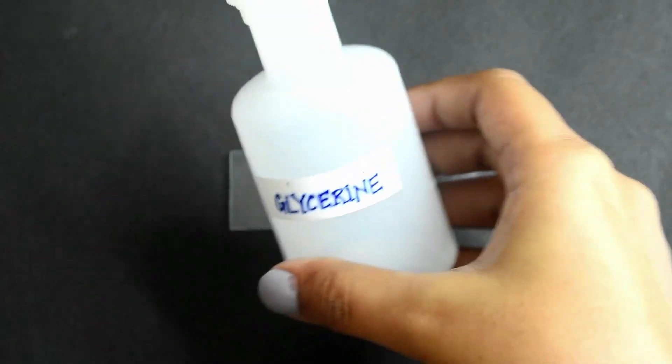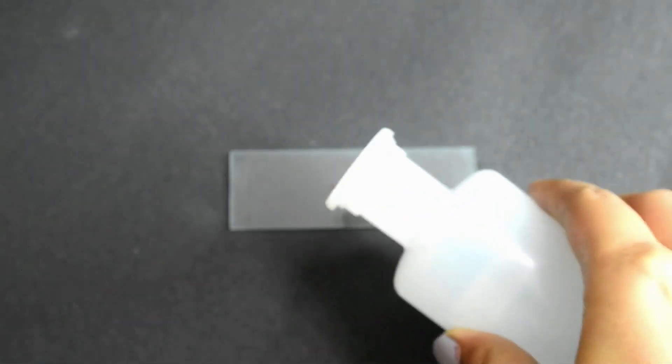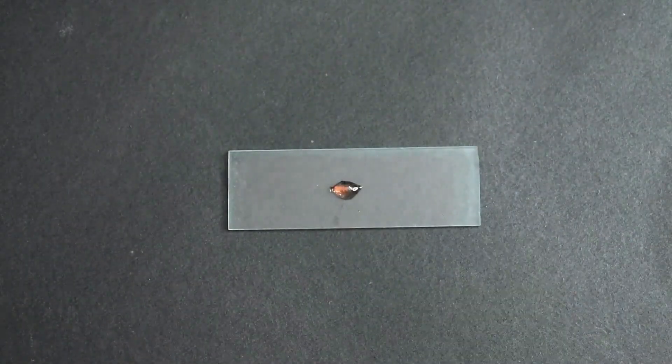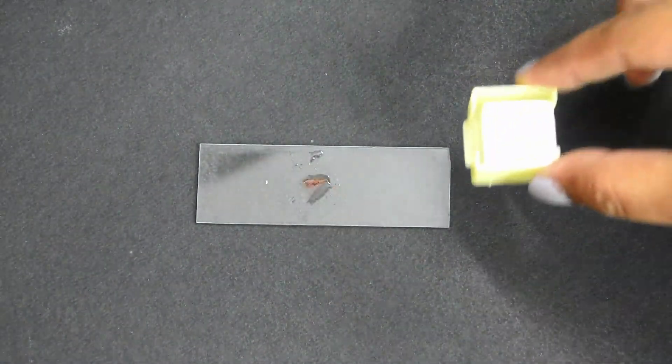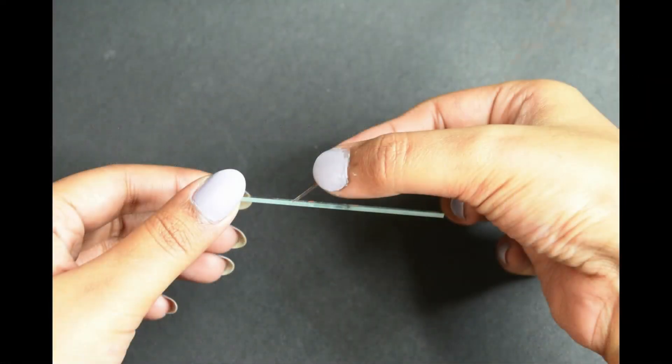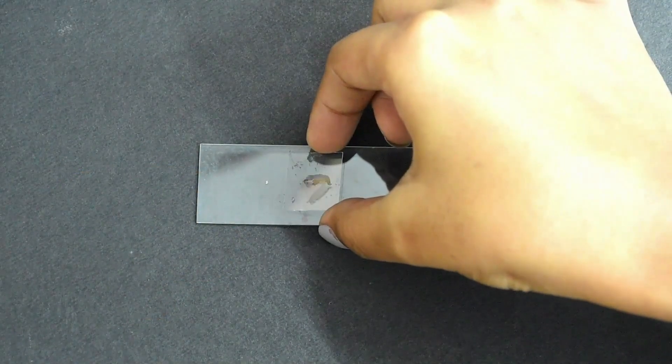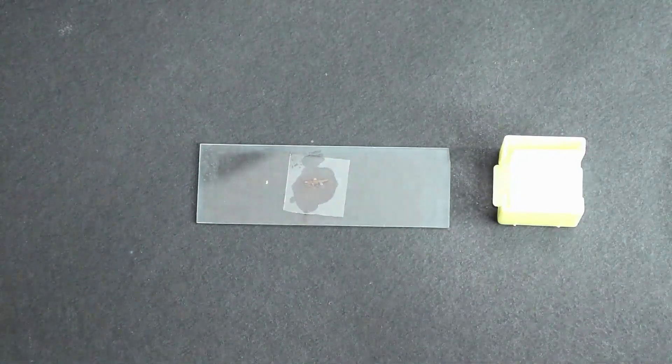Then we carefully add a drop of glycerin on top of this transparent layer. We will gently take a cover slip and place it on top of the slide at a 45-degree angle. We will slowly lower the angle until we have completely covered the transparent epidermal layer.